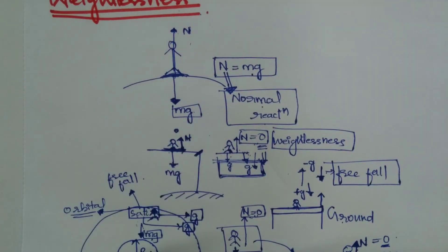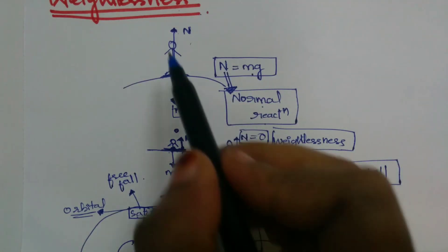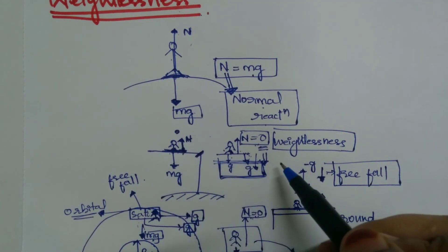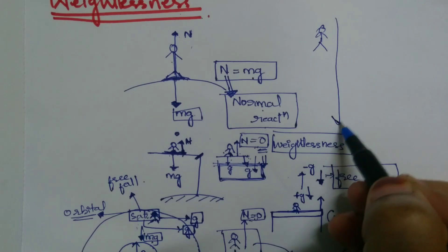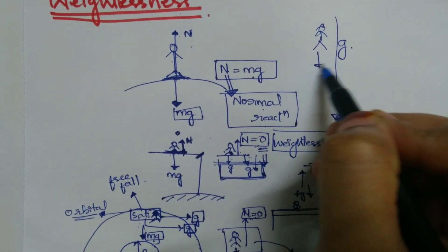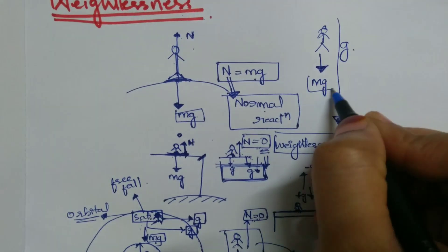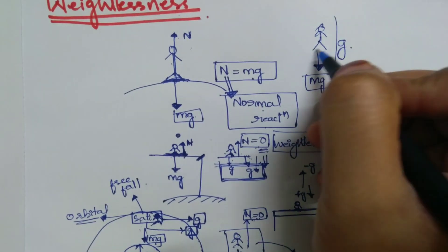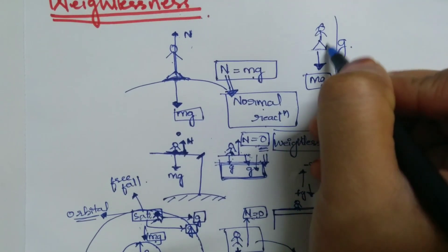So what is weightlessness? We can say weightlessness is the condition experienced while you are under a free fall. While you are freely falling under gravity, the earth is attracting you with a force of mg, but you are not applying any force on the surface.